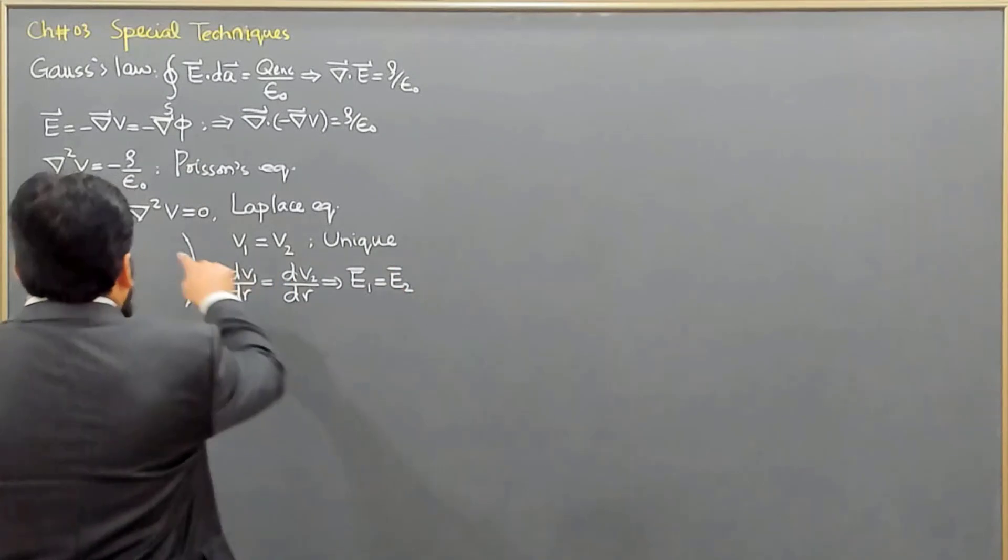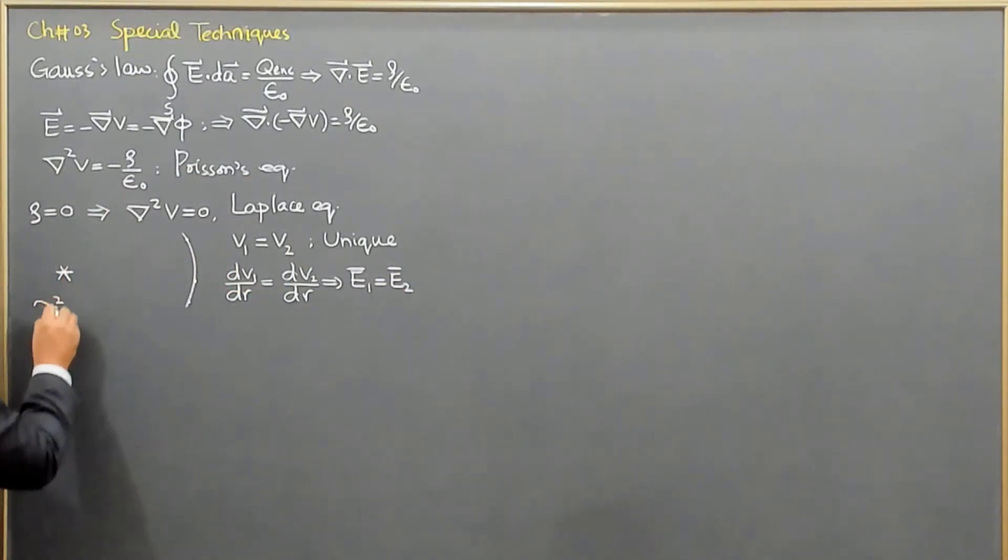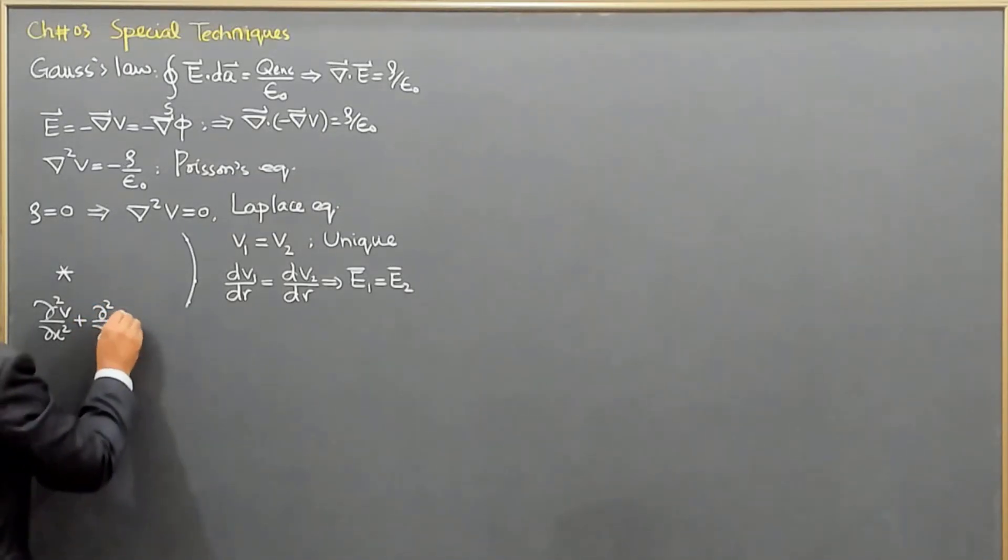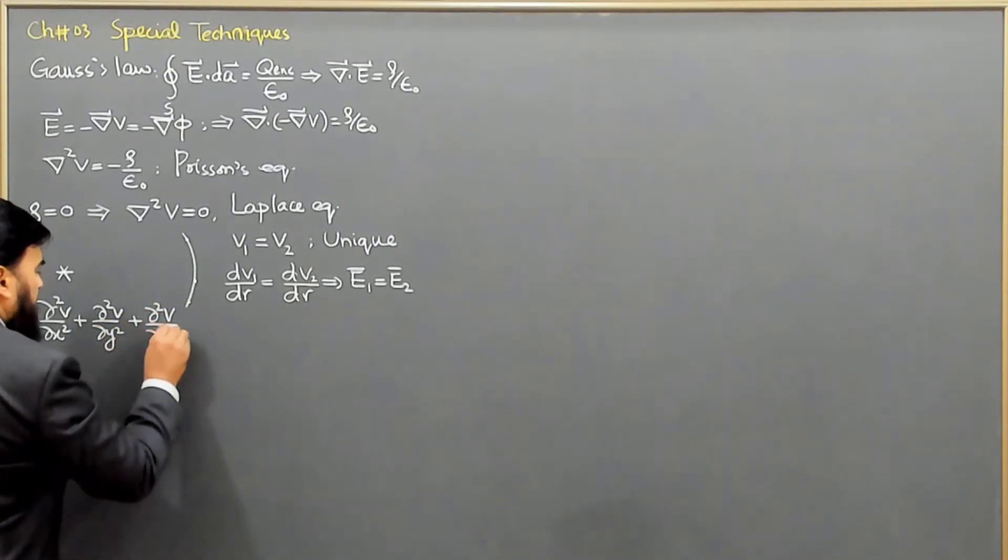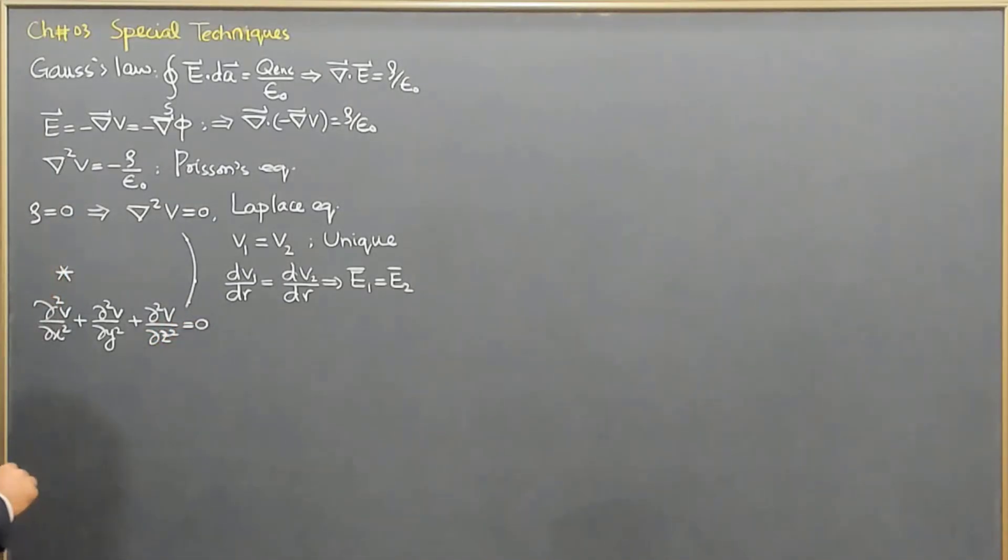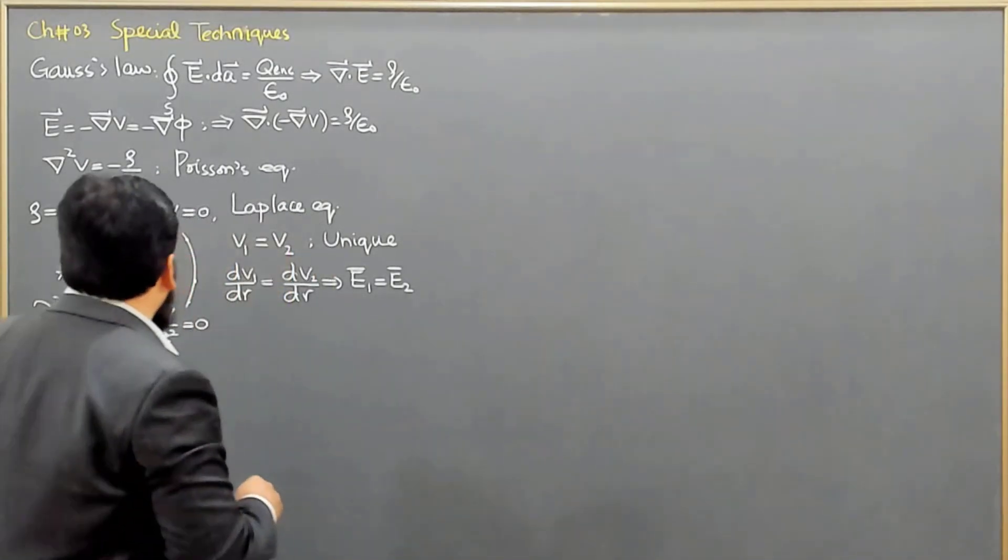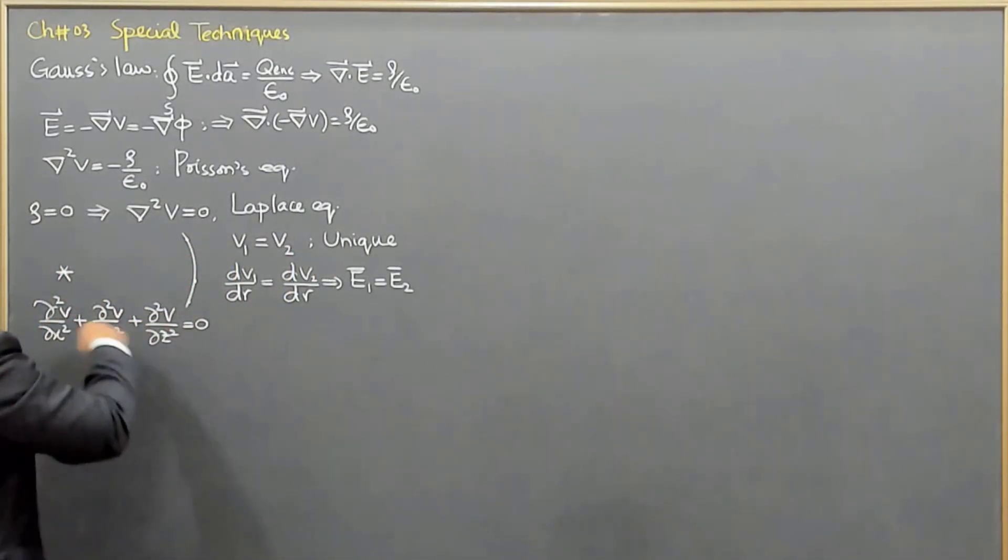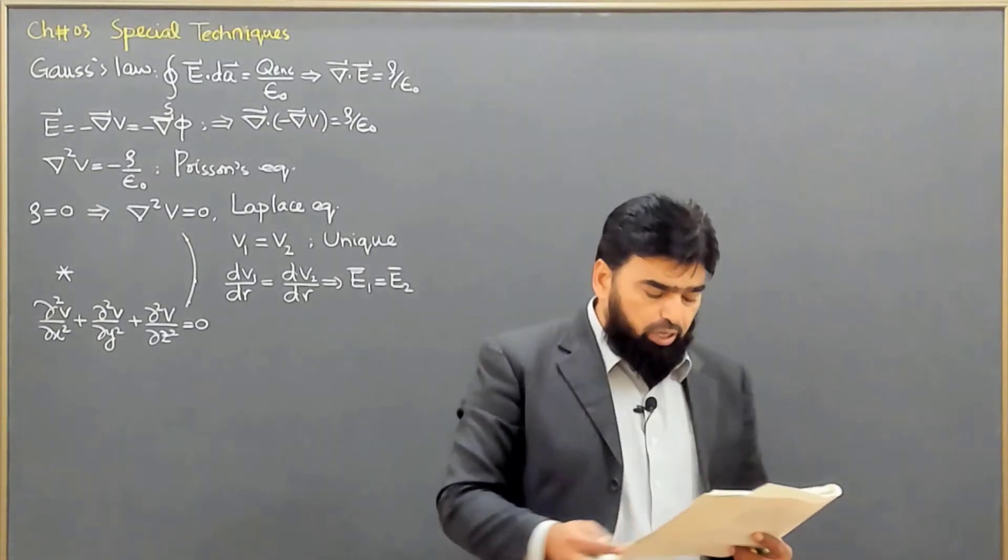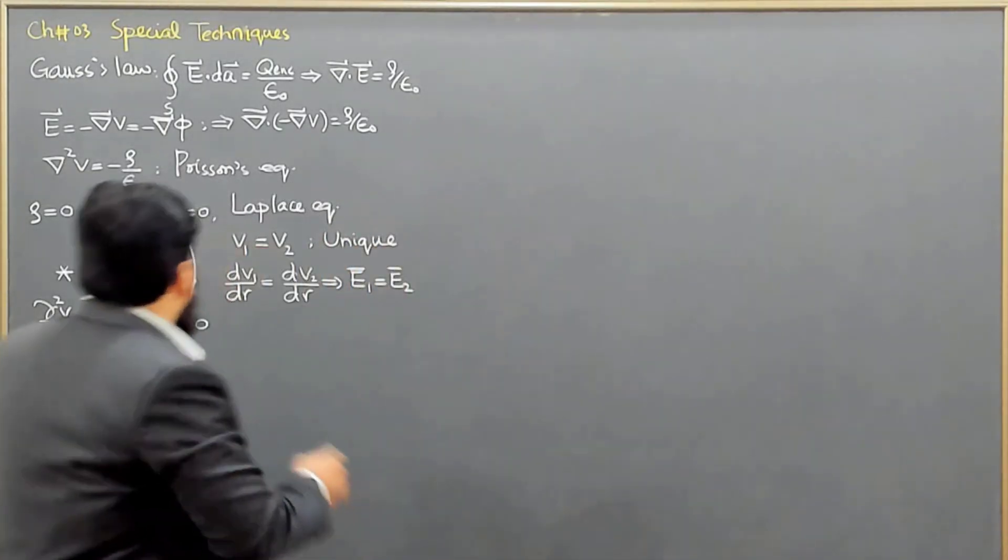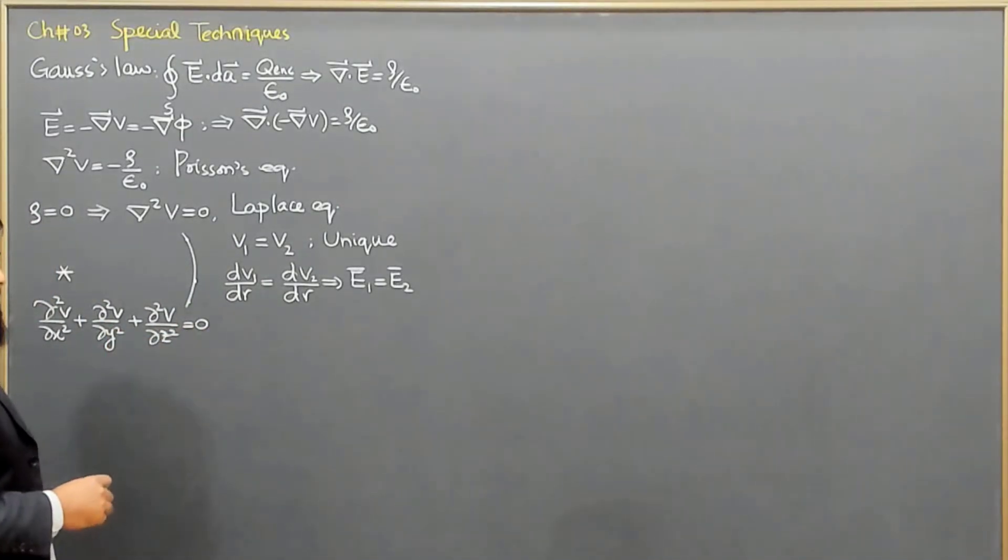Now, here when I write this equation, then I know that del square is partial square over partial x square. And V here plus partial square over partial y square. And V here plus partial square V over partial z square is equal to 0. And the del square is basically if I take V out, then partial square by partial x square and partial square by partial y square and so on is basically the del square value and del square of V equal to 0. And V will follow to solve this equation.